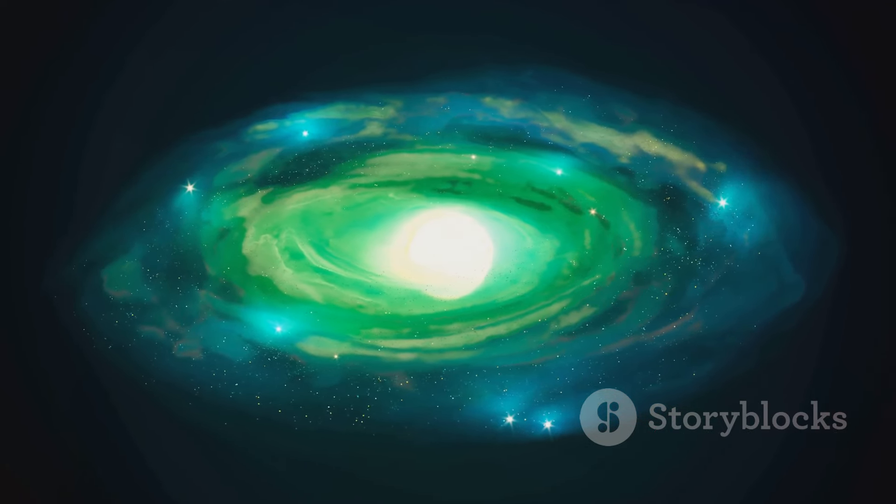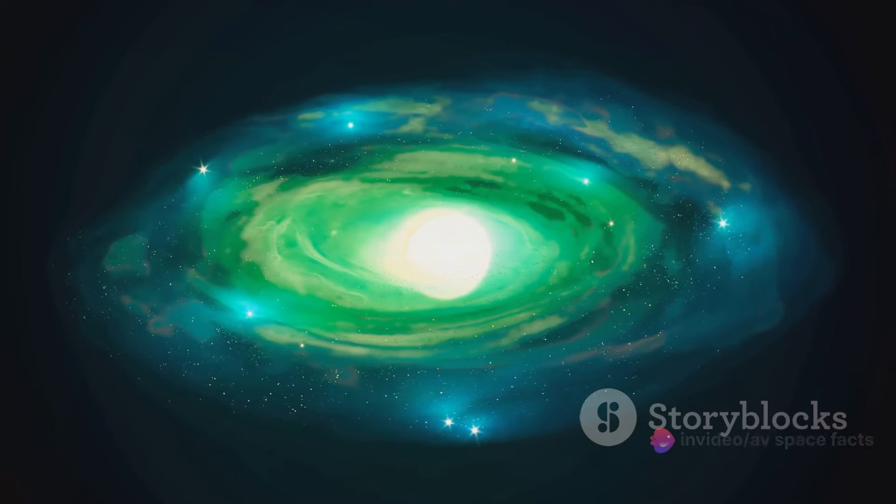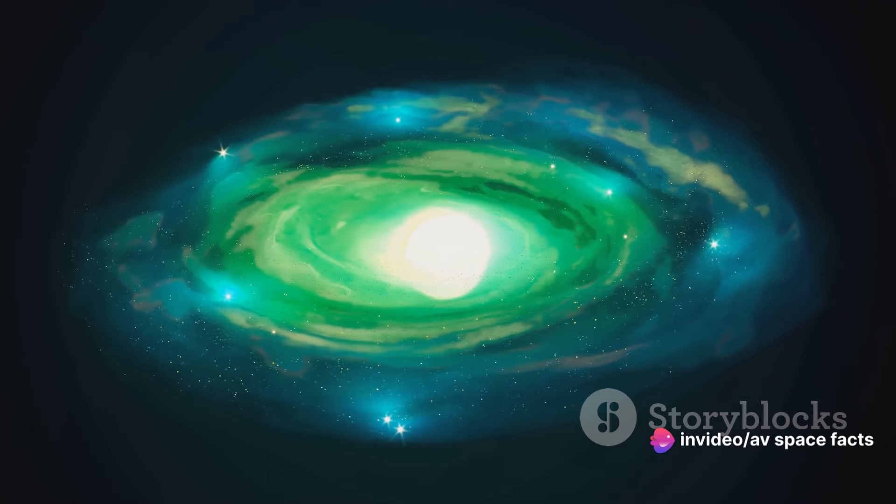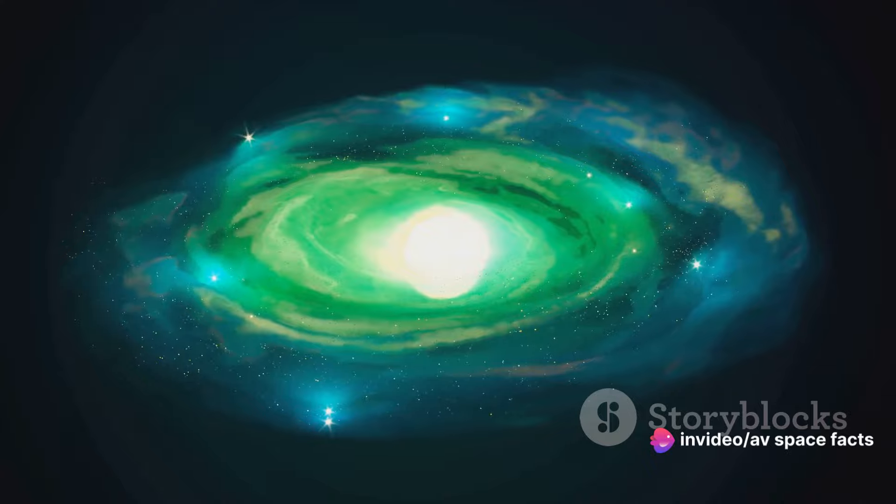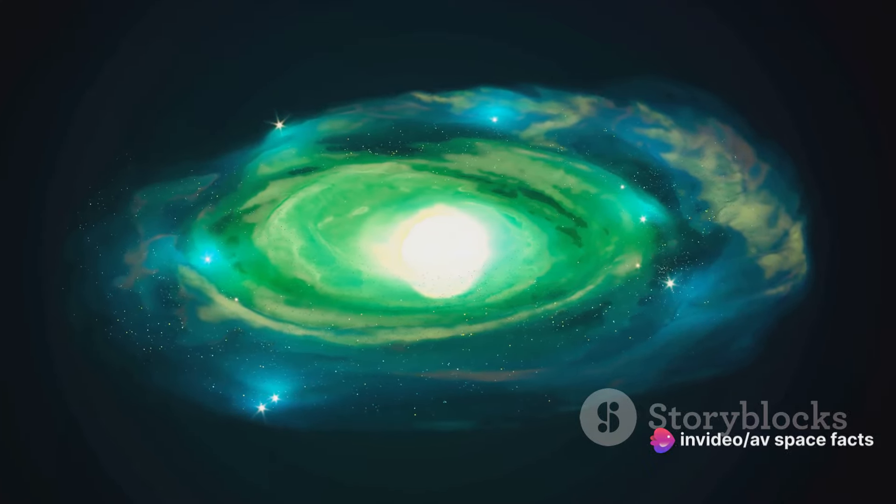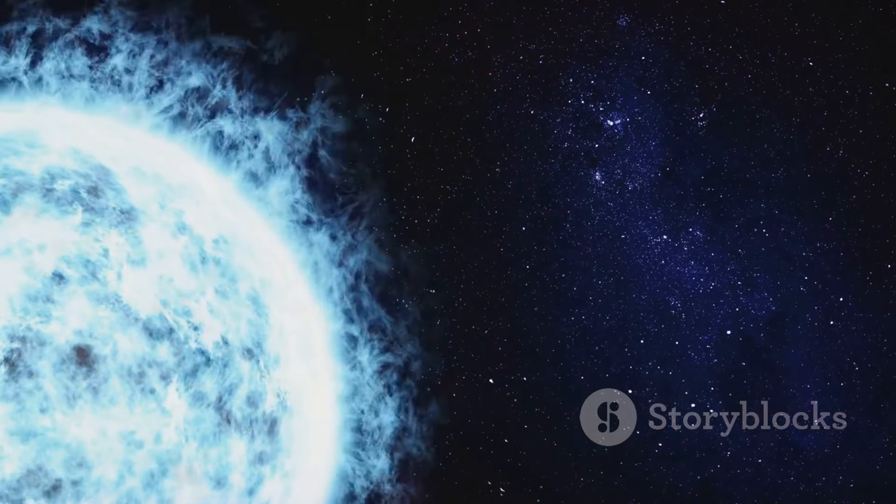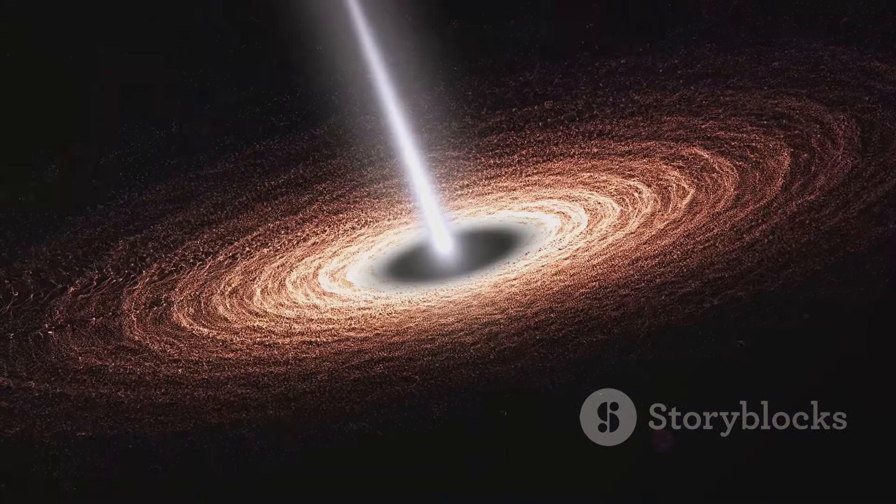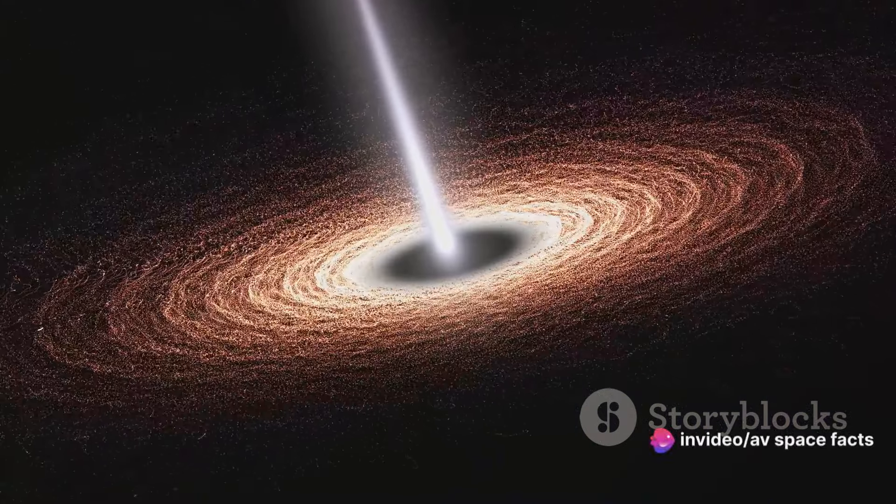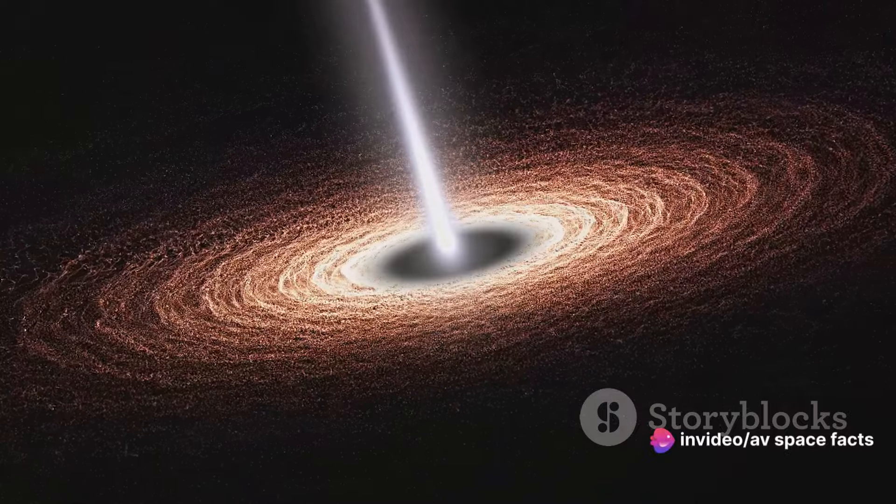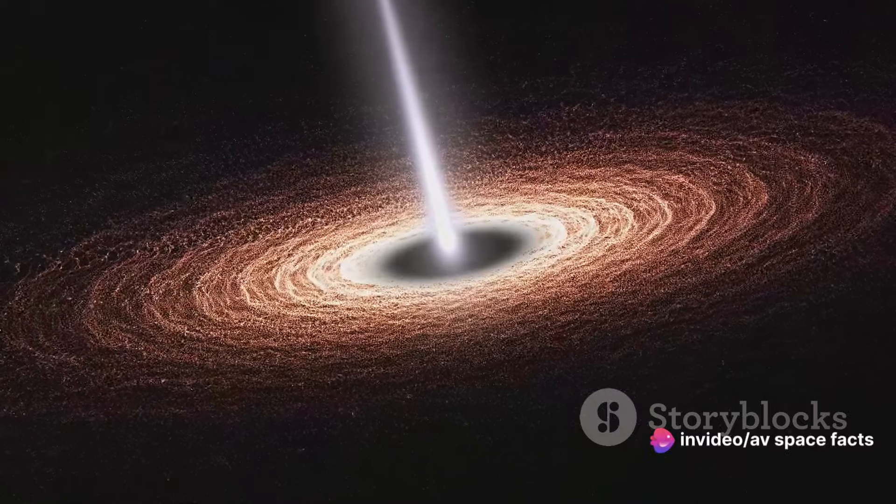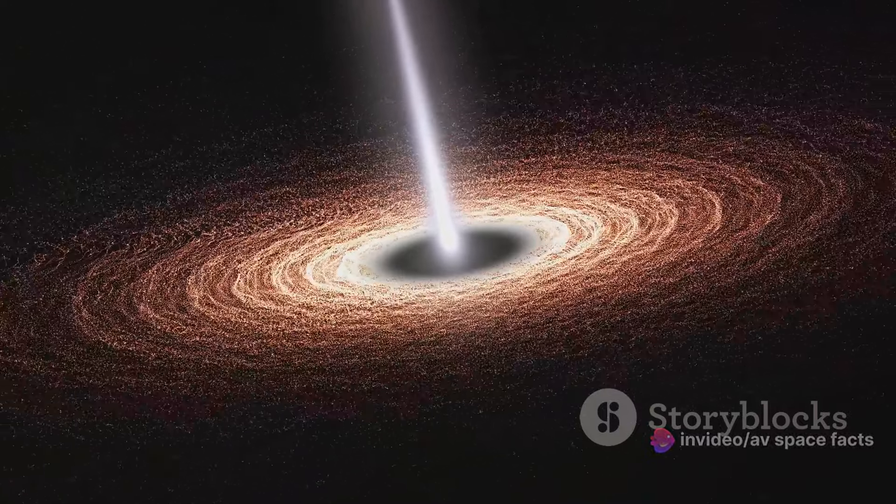We reside on a blue-green planet that spins around a relatively average star, a star that is just one among the 200 to 400 billion stars in the Milky Way galaxy. And our galaxy? It's merely one of two trillion galaxies that we know of in the observable universe. When you consider these staggering numbers, it's easy to feel like a tiny speck, an afterthought in the grand cosmic scheme, but that's just one perspective.